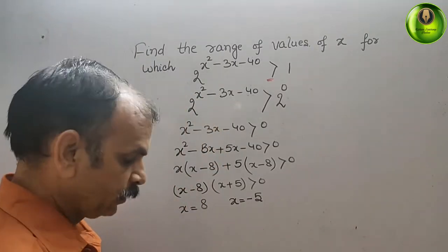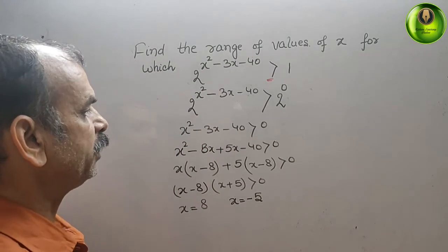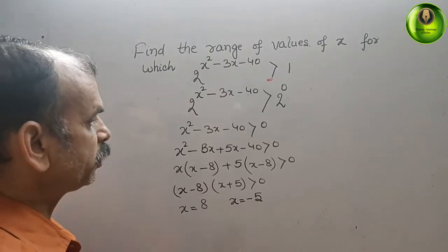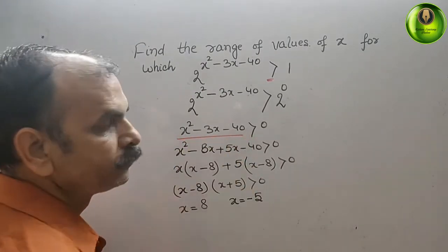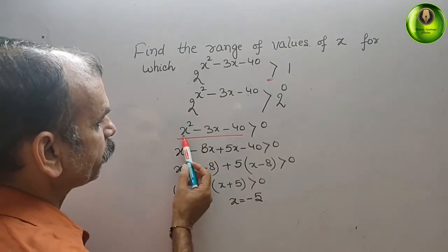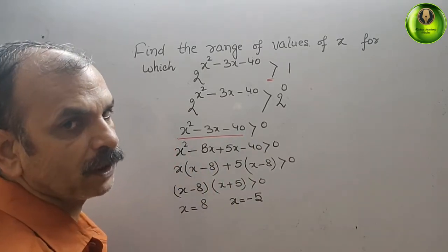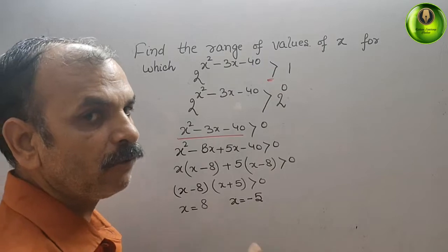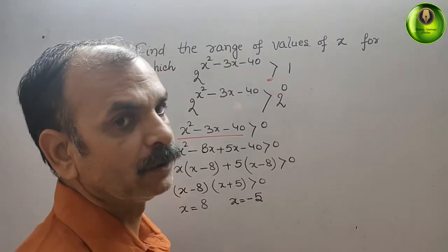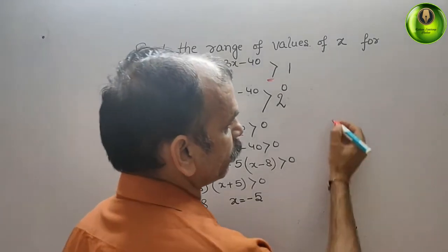See that. Next, what we have to see? We have to see that equation should be a positive or a negative. We can see it is a positive coefficient of x square. Therefore, we will get a minimum point. So here is your minimum point.